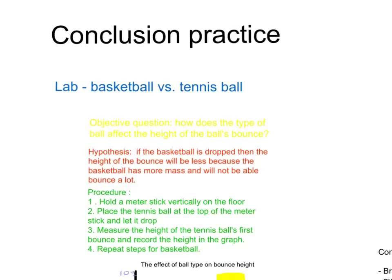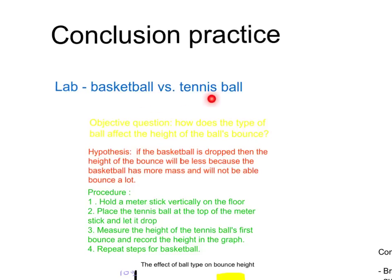The lab is about comparing two different kinds of balls we use in sports: a basketball and a tennis ball. The whole question here is how does the type of ball — either basketball or tennis ball — affect the height of the ball's bounce? This lab is only comparing these two types of balls.